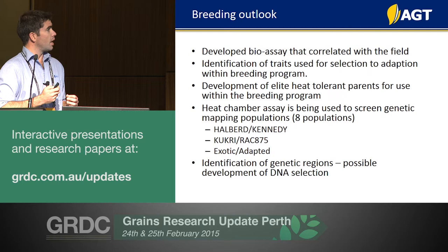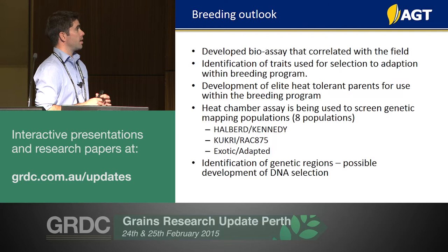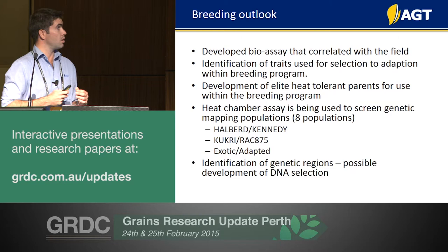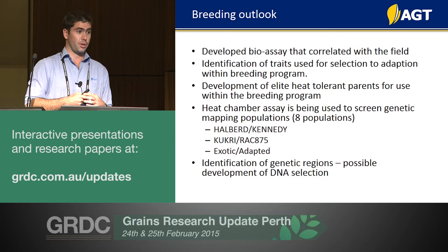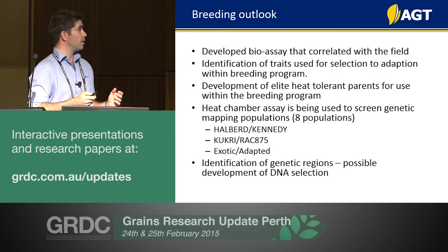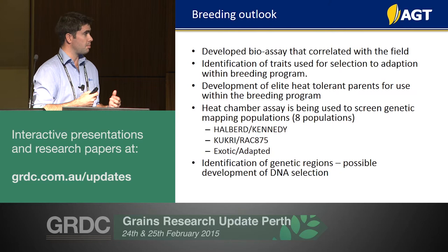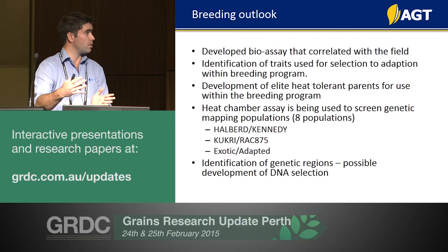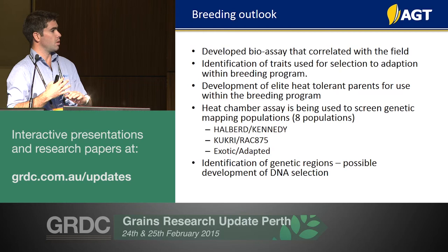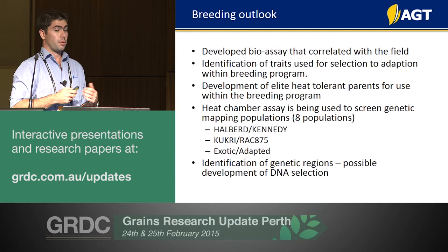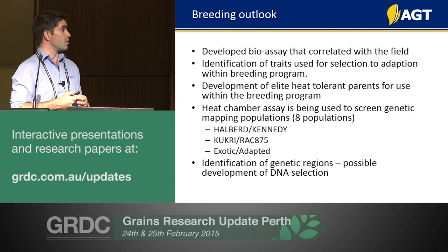Briefly, last year I put over 4,140 plants through the heat chamber — a ridiculous amount of work. These were primarily doubled haploid populations. We're using 1,500 of these mapping lines, screening them through the heat chamber and in the field this year at a number of locations, trying to understand the same variety responses discussed earlier. Hopefully we'll be able to identify genetic regions associated with improved trait performance to use as selection tools within the breeding program.